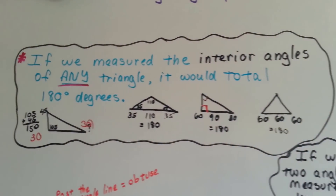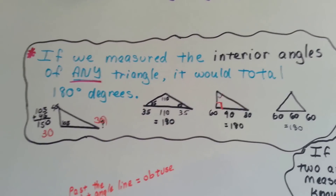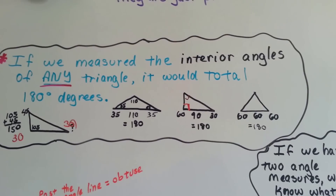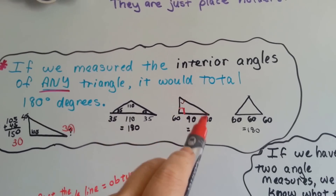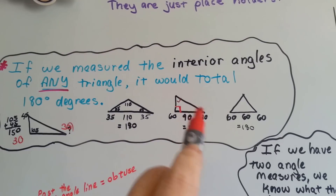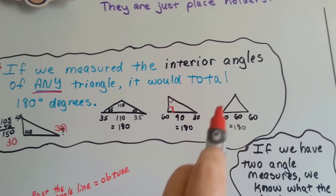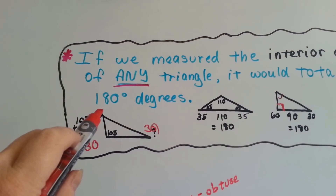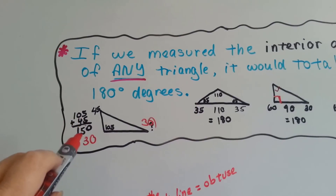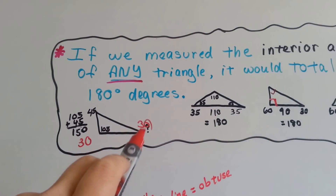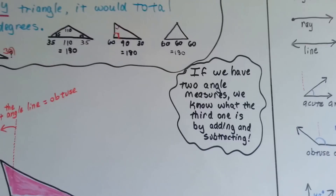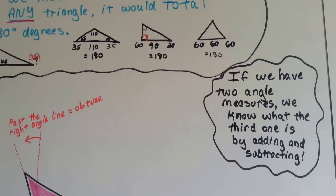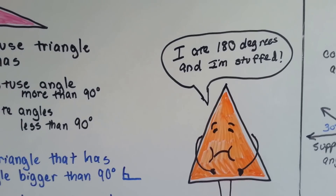If we measured the interior angles of any triangle, it would total 180 degrees — always. If one angle was 110 degrees and another was 35, we'd know the third is 35 because that's what's left to equal 180. If one was 90 degrees and another was 60, we'd know the third is 30. For an equilateral, they're all 60 because 3 times 60 is 180. If a triangle had a 45-degree angle and a 105-degree angle, those add to 150, so the missing angle would be 30 degrees. If we have two angle measures, we find the third by adding those two together and subtracting from 180.